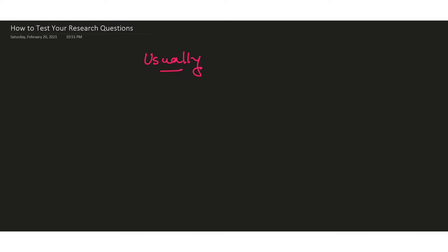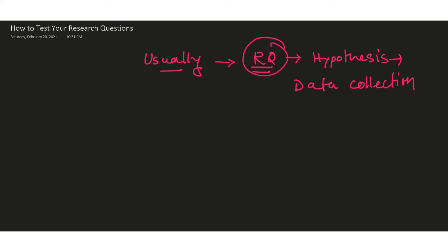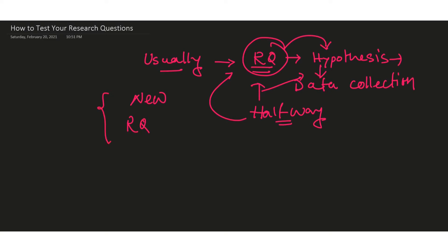Usually in social science or any science project, we first formulate the research questions, then move to the hypothesis, and then to data collection. The problem is: if you set your research question, formulate the hypothesis accordingly, and then go for data collection, you may reach halfway through and find that the data you have collected is not supporting your research questions or hypothesis. At that point it is very difficult to come back and set new research questions.